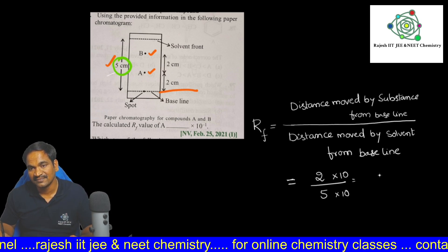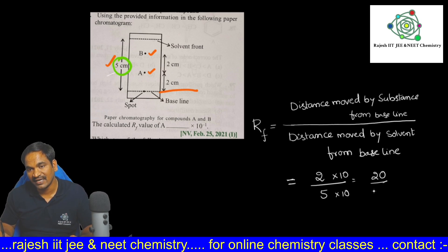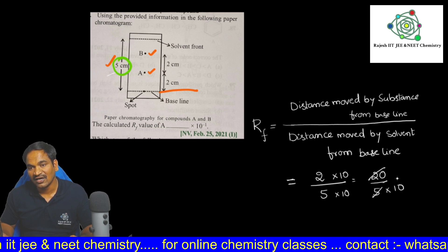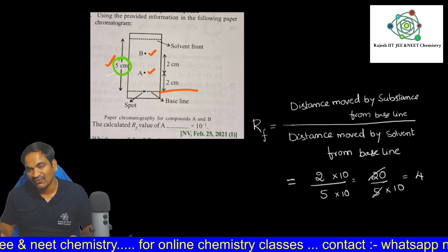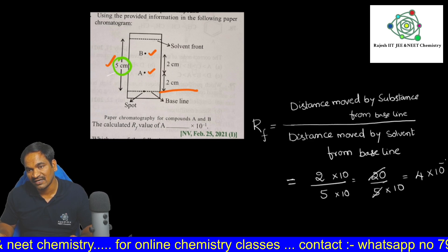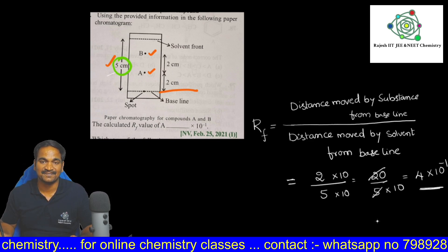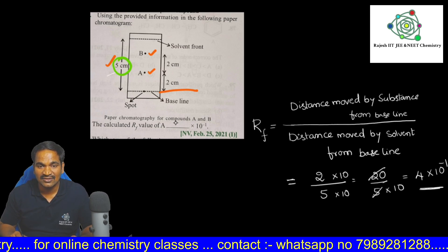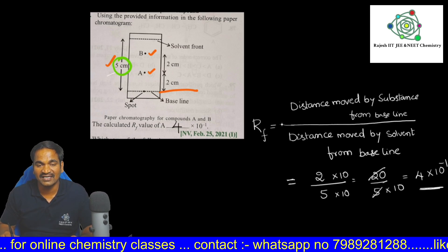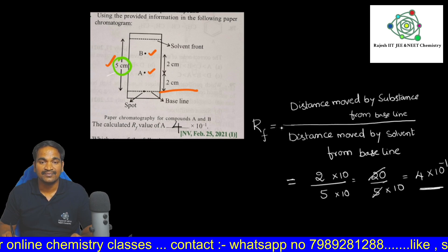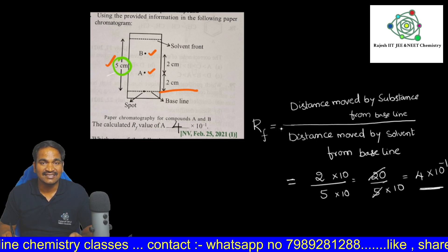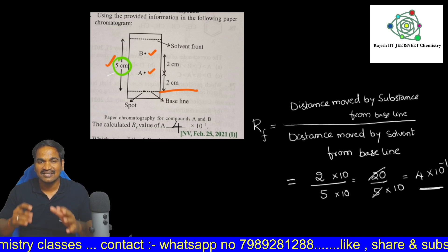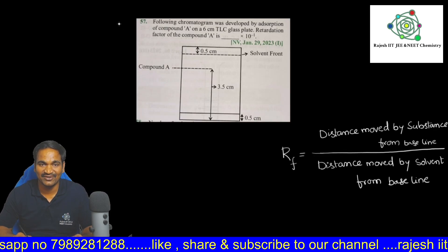So we have 2 divided by 5. Multiplying numerator and denominator by 10: 20 divided by 50, which equals 4 × 10⁻¹. So the retardation factor RF value of substance A is 4 × 10⁻¹.